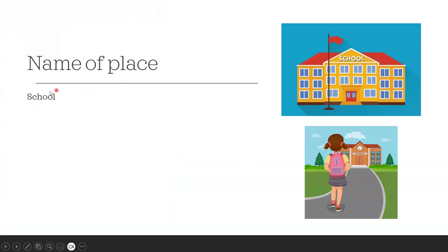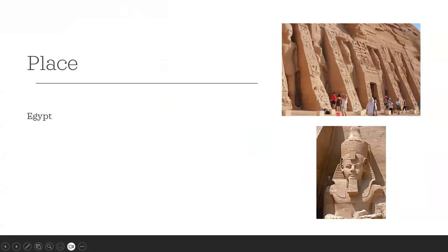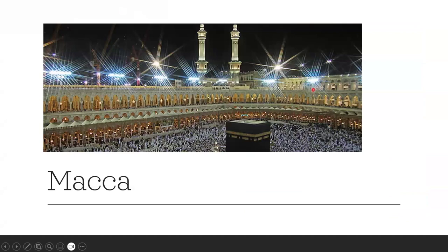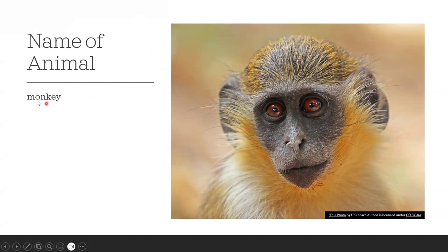Noun can also be the name of a place. Place like what? School — school is a place. Sudan — Sudan is a place. Egypt — Egypt is a place. Mecca — Mecca is a place. These are all names of places.